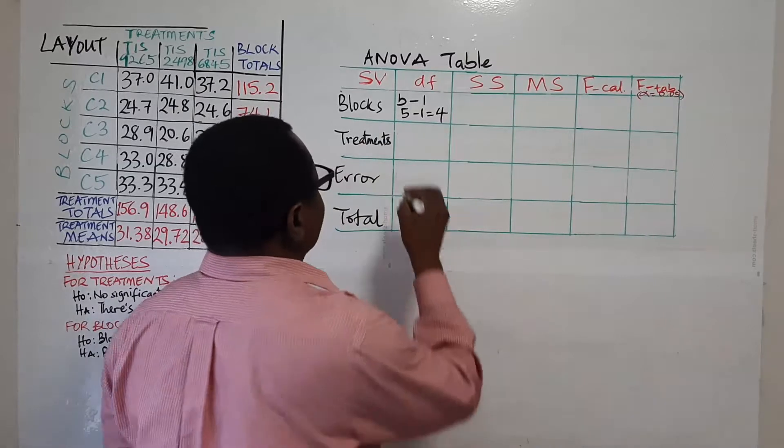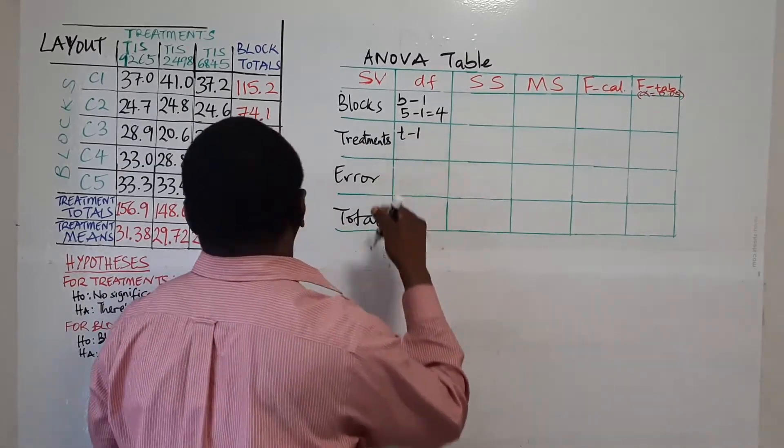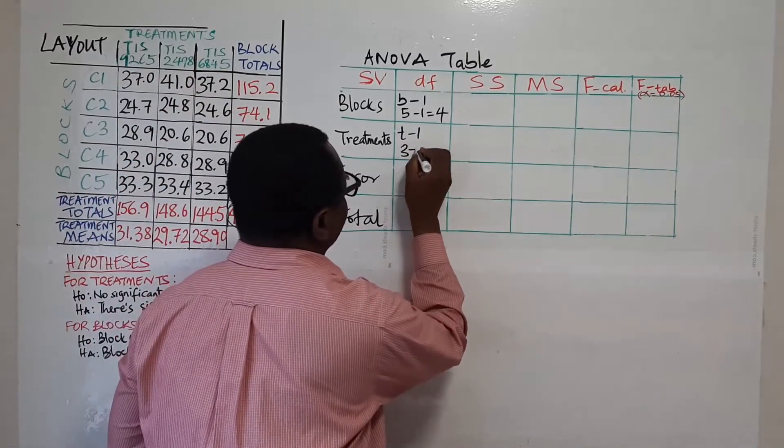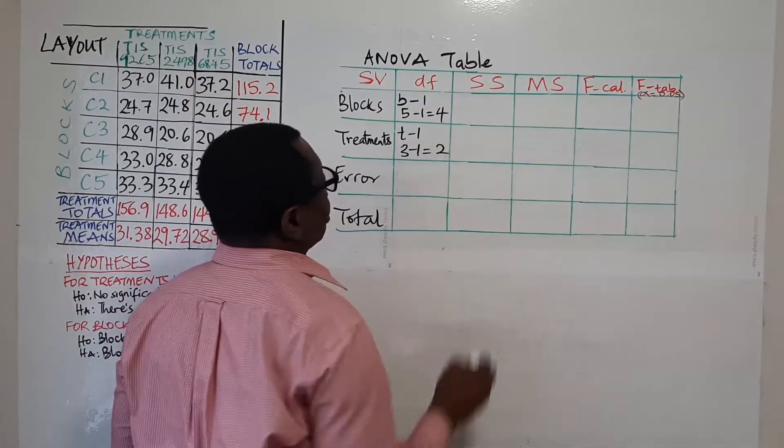For treatments is t minus one. How many treatments do we have? One, two, three. So we say three minus one which is equal to two.